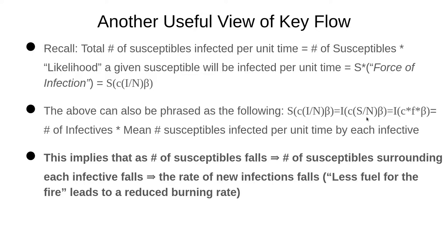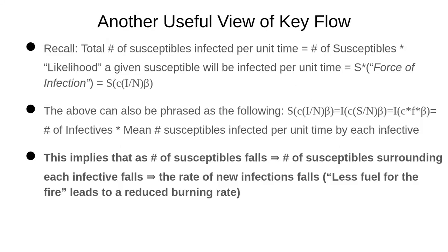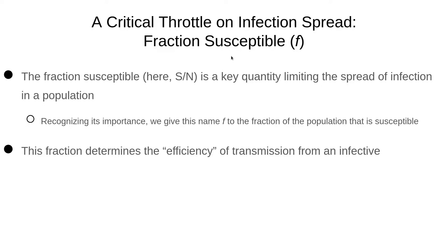Amongst other things this implies: as the number of susceptibles falls — if you have a tenth of the number of susceptibles — the number of people infected is going to fall commensurately and proportionally. That's a reflection of the fact that around each infective, there's one-tenth the number of people susceptible. So they have less ability to infect people around them. This fraction susceptible — S over N — is this key quantity that limits the spread of infection in the population. It really determines the efficiency of transmission from an infected person.